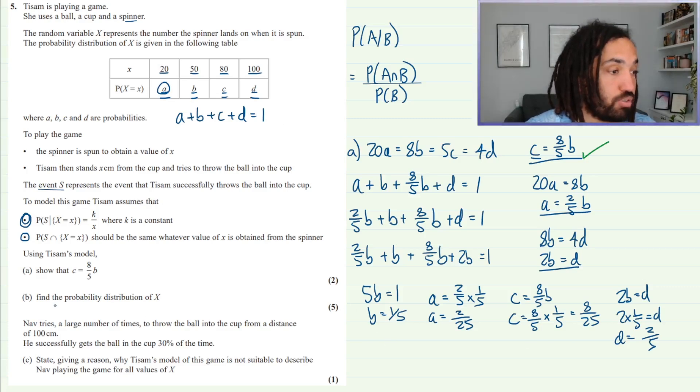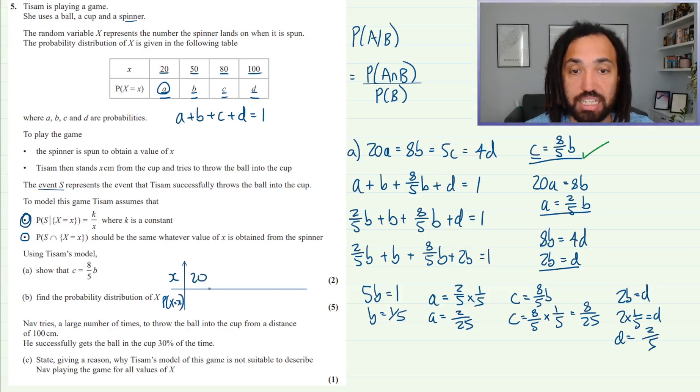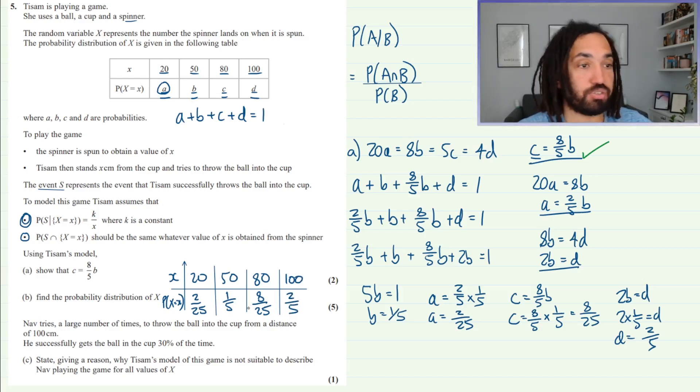So all that's left to do is actually to find the distribution of X, so I think we need to actually draw the distribution out. So we would write the probability that capital X is equal to little x: 20 is the first value and that probability is A which is 2 out of 25, and then the next one is 50 which is 1 out of 5, and then we have 80 which is 8 out of 25, and then the last one we have is 100 which is 2 fifths. And that is the distribution and that is full marks.